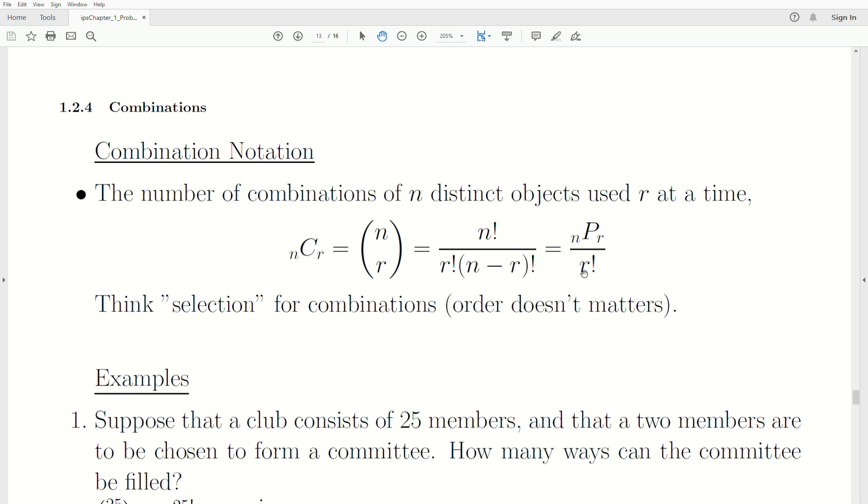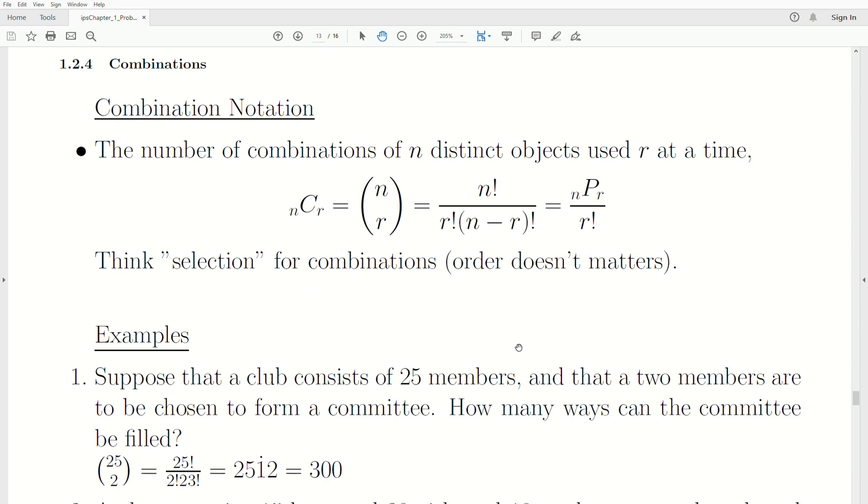One thing to think about when you're trying to decide between permutations or combinations: in combinations, you think selections, where in permutations you think arrangements. In permutations, order matters. In combinations, order doesn't matter. Hopefully I'll illustrate that with a few examples.